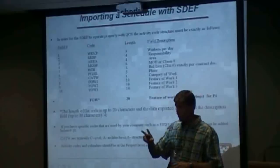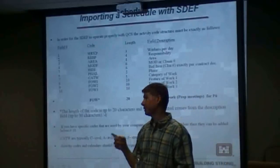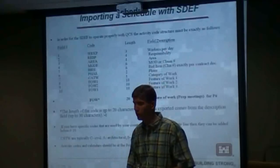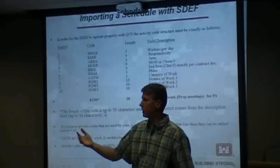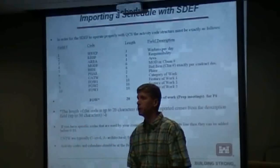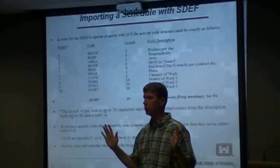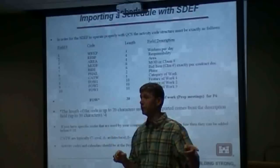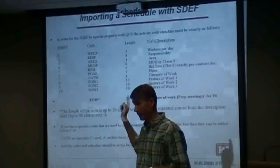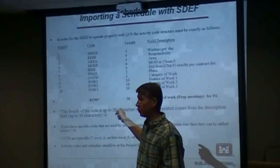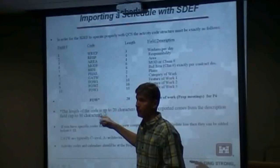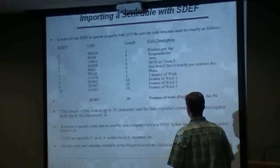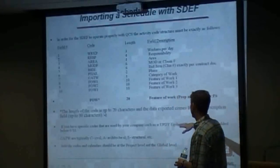The second item: your plans have to be balanced and in sync every single time. So if we give you a modification — a notice to proceed on a price change order for, say, another $30,000 — you may not be in agreement with us on cost yet. But if we give you a notice to proceed, you're going to have to put an activity in your schedule for that $30,000, or it won't import and you won't get paid this month. The schedule is very dynamic and we expect it to be kept up to date.